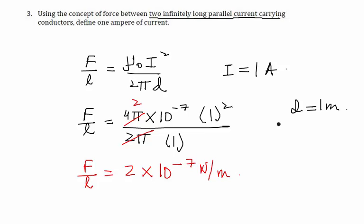So we can easily say that 1 ampere of current can be defined as the amount of current which, when flowing in the same direction through two infinitely long parallel wires separated by 1 meter, produces an attractive force of 2 × 10⁻⁷ newton per meter of attractive force.